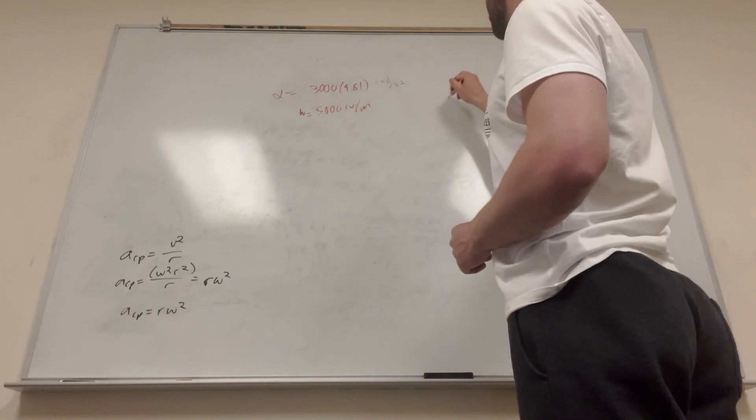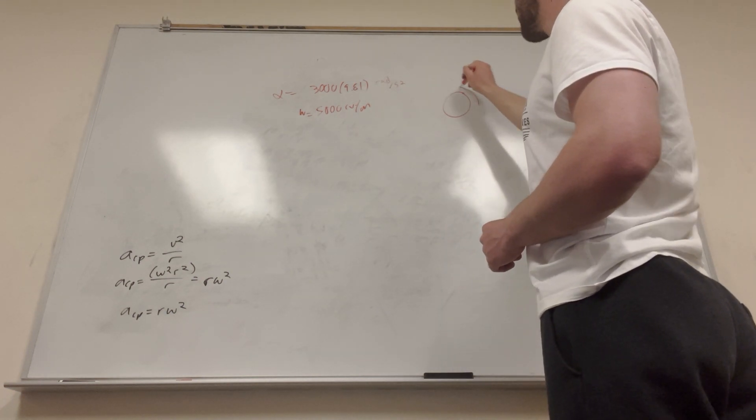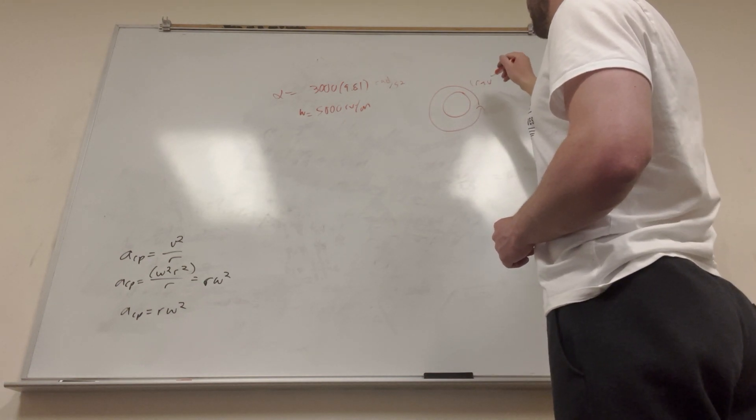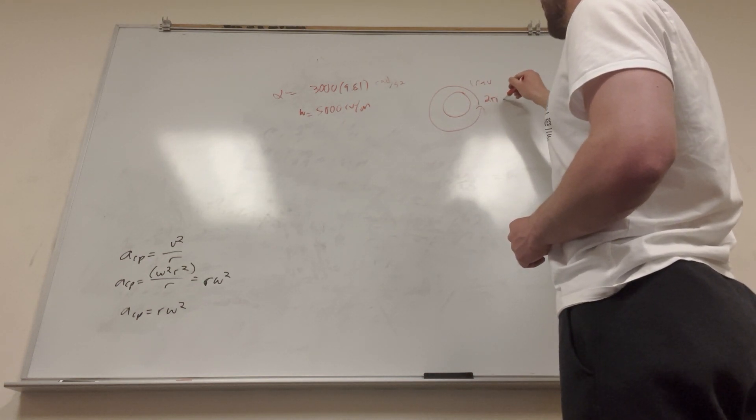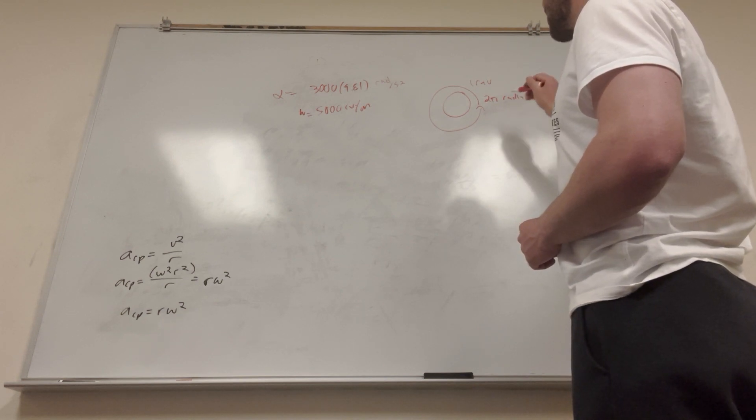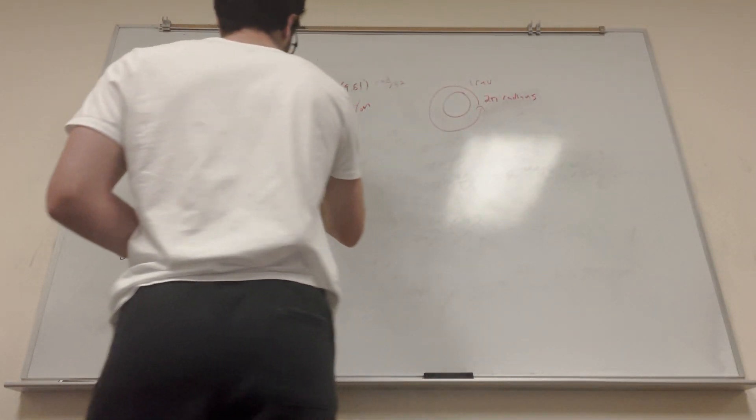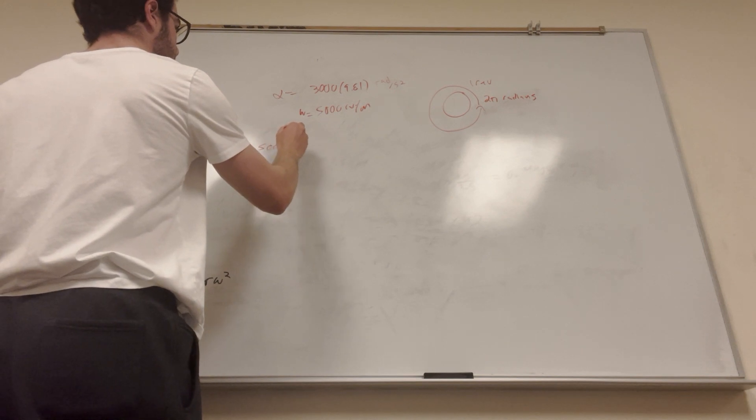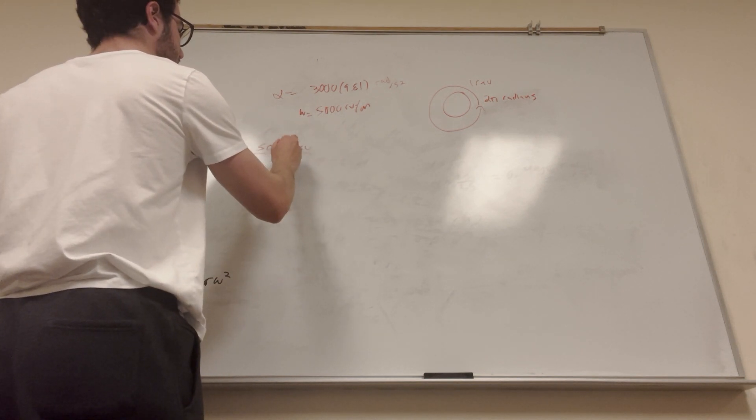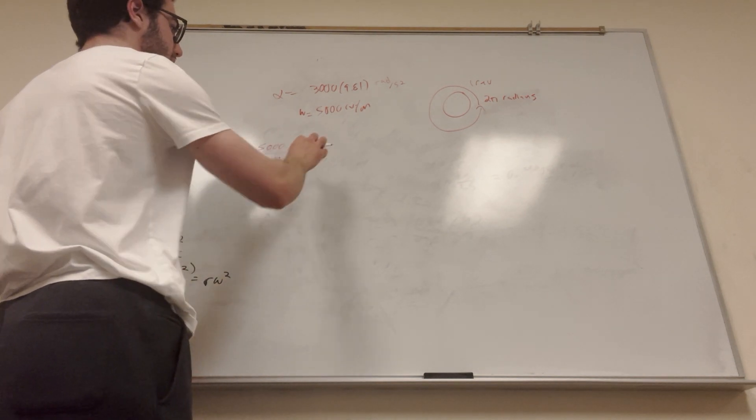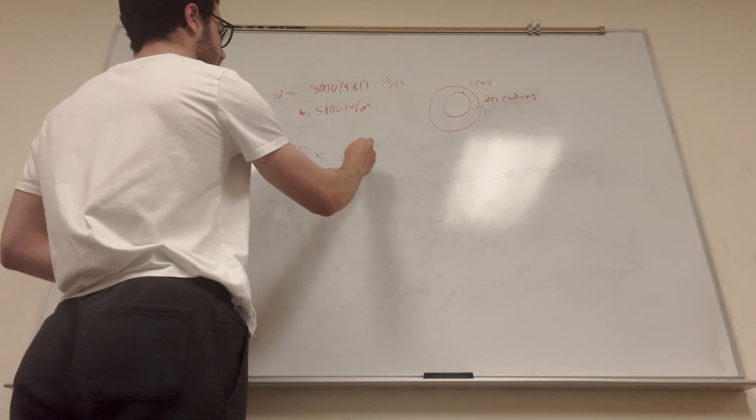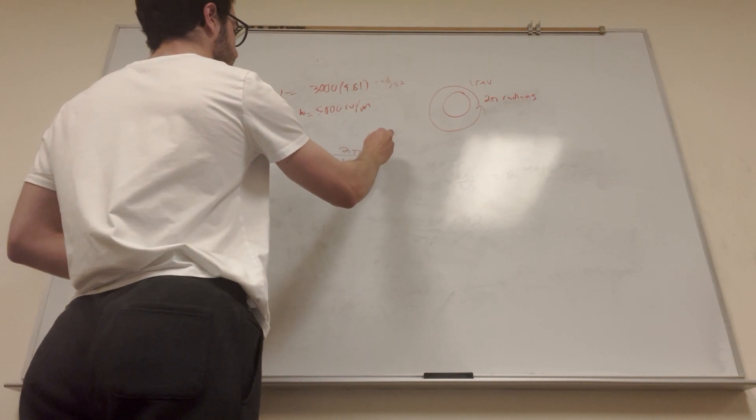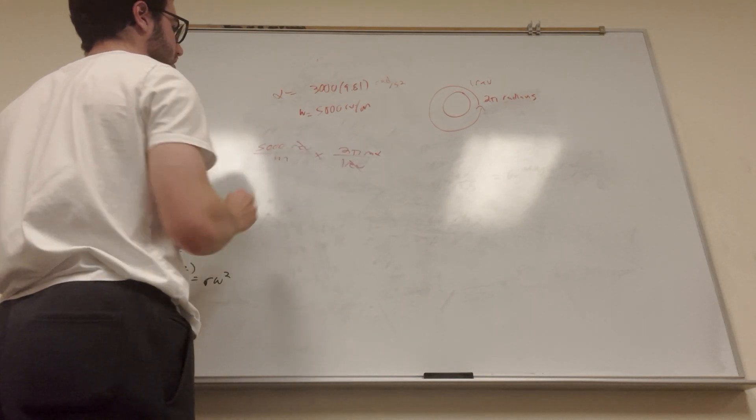When we look at a circle, one full rotation is one rev, but it's also 2π radians. So to convert that, we're going to take 5,000 revolutions per minute, and then we're going to multiply it by 1 rev equals 2π radians. So the revolutions are going to cancel out.